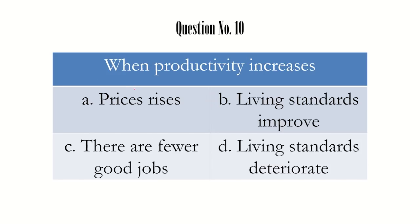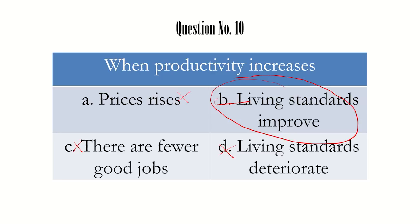The last question: when productivity increases, what happens? When productivity increases, does price rise? No, definitely not. Does living standard improve? There is a good chance of this being the answer. Are there fewer good jobs? No — when productivity increases, a good number of jobs are created. Does living standard deteriorate? No, definitely not — when more goods and services are produced, the living standard only improves. So the answer is option B: living standard improves when productivity increases.